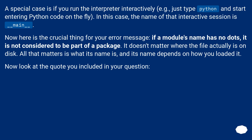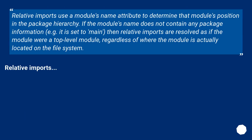A special case: if you run the interpreter interactively, the name of that session is __main__. Here is the crucial thing — if a module's name has no dots, it is not considered to be part of a package. It doesn't matter where the file is on disk; all that matters is its name, which depends on how you loaded it. Relative imports use a module's __name__ attribute to determine its position in the package hierarchy. If the name is set to __main__, relative imports are resolved as if the module were a top-level module.